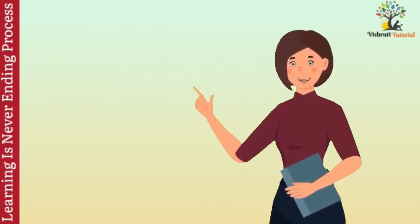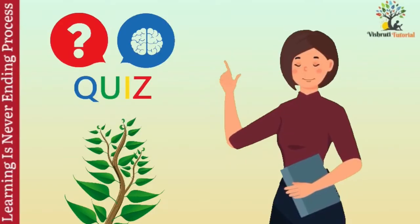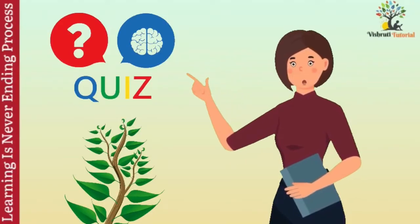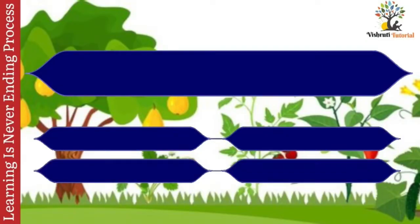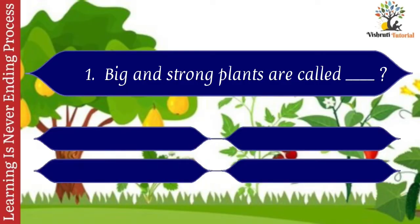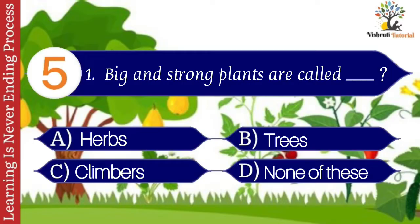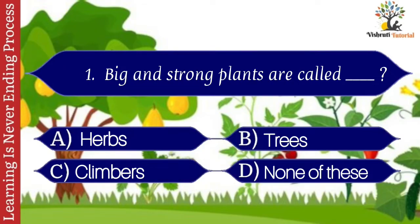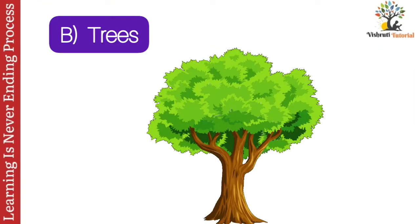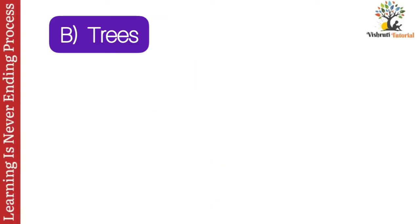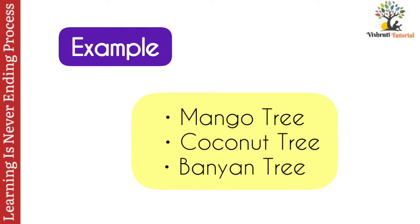Hello everyone. In this video I have come up with a quiz on plants. Let's start. Question number one: big and strong plants are called dash. Options: A. Herbs, B. Trees, C. Climbers, D. None of these. The correct answer is B. Trees. Big and strong plants are called trees — example: mango tree, coconut tree, banyan tree, etc.